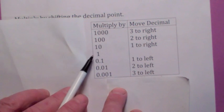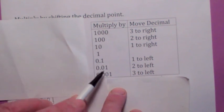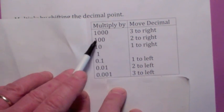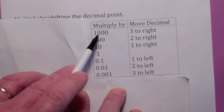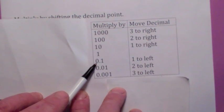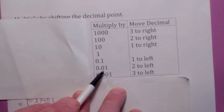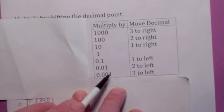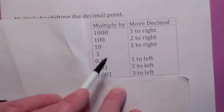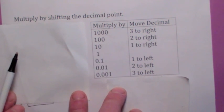Here's the pattern to recognize. When you multiply by 1, it doesn't change the decimal place. When you multiply by 10 — these are called powers of 10 — it moves the decimal 1 to the right. 100 moves it 2 to the right. 1,000 moves it 3 to the right. Similarly, when you multiply by 1/10, that moves the decimal 1 to the left. 1/100 moves it 2 to the left. 1/1,000 moves it 3 to the left.